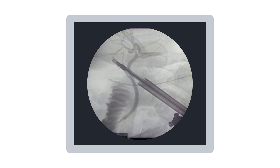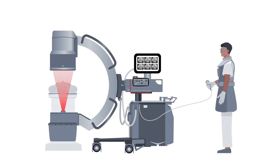Viewing the bile ducts before removal of the gallbladder may help ensure that the surgeon does not cut or damage the common bile duct. During this procedure, the radiologic technologist will position the C-arm over the right upper quadrant of the abdomen where the biliary system is located. As the surgeon injects the contrast media, the technologist will take exposures as directed using either the exposure switch on the C-arm, remote control, or the foot pedal.